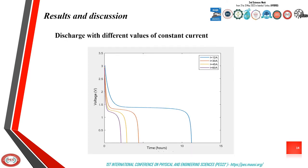What you see here are the voltage curves during the discharge process with different values of constant current, by setting the value of the operating temperature. As you can see, the higher the discharge current, the shorter the discharge time of the battery.